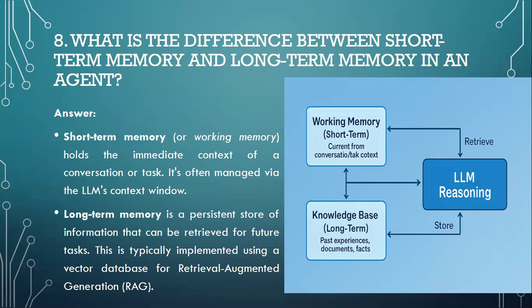Moving to question number eight: What is the difference between short-term memory and long-term memory in an agent? Short-term memory or working memory holds the immediate context of a conversation or task — it's often managed via the LLM context window. Long-term memory is a persistent store of information that can be retrieved for future tasks. This is typically implemented using a vector database for retrieval augmented generation, also called RAG.